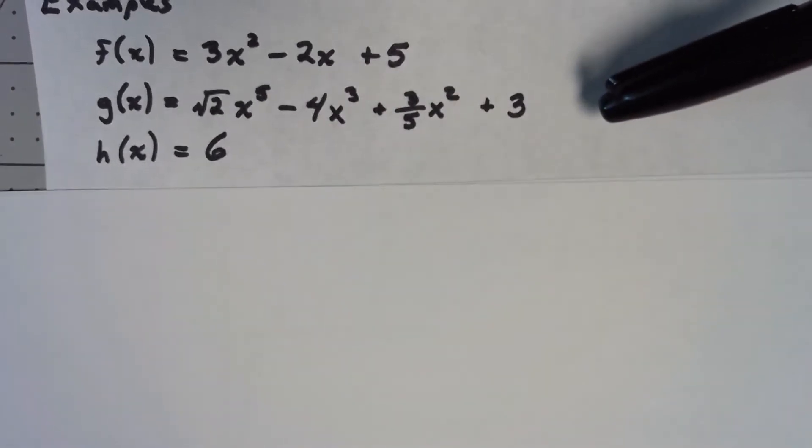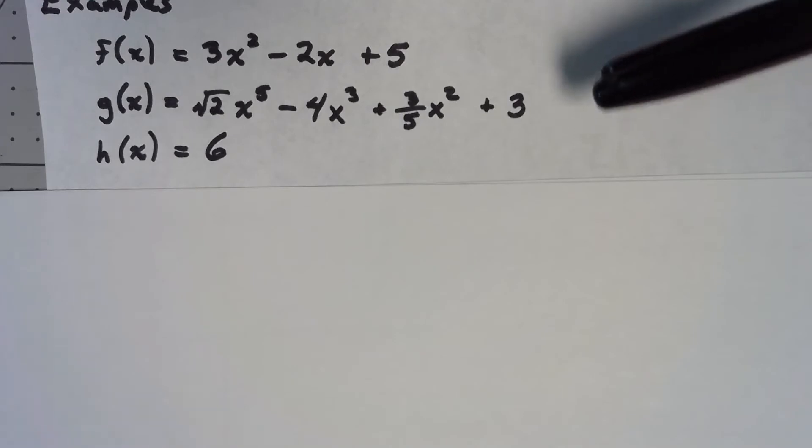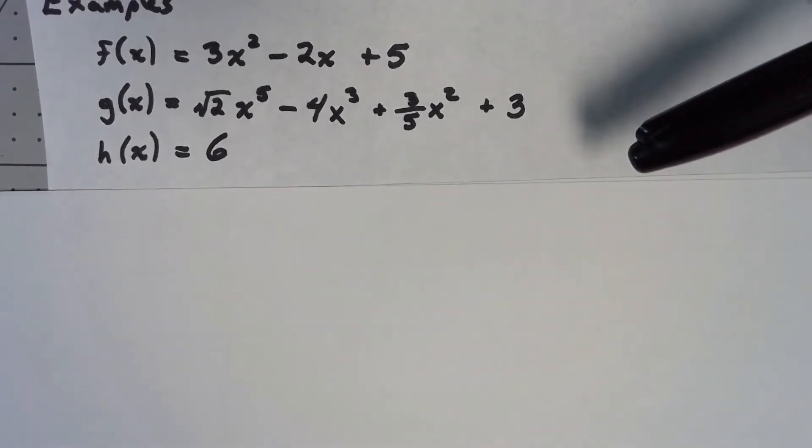So the second one we've got things like the square root of 2 and the 3 fifths. They don't have to be nice numbers but still a polynomial.